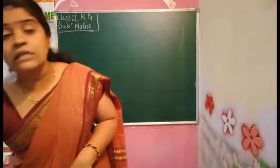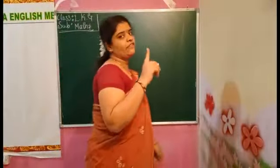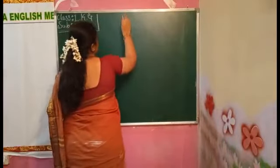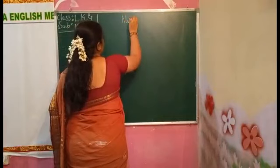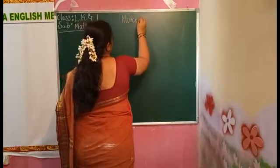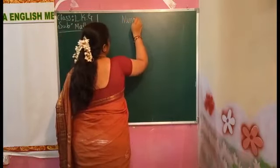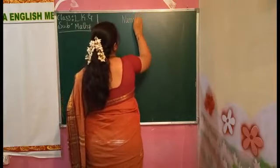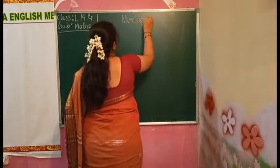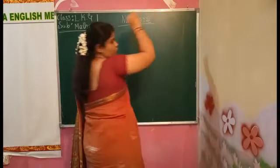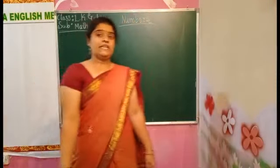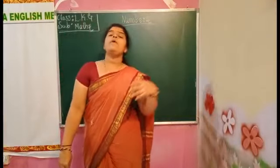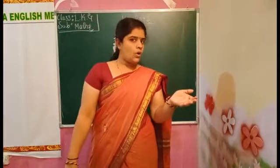In our last class, we learnt our 21 to 25 numbers and number names. Once again, we revise. We revise 21 to 25 numbers — how we have to write the numbers 21 to 25, and how we have to write the number names.